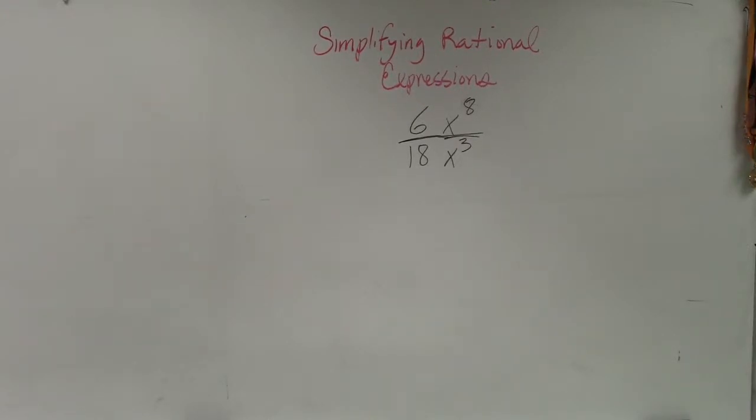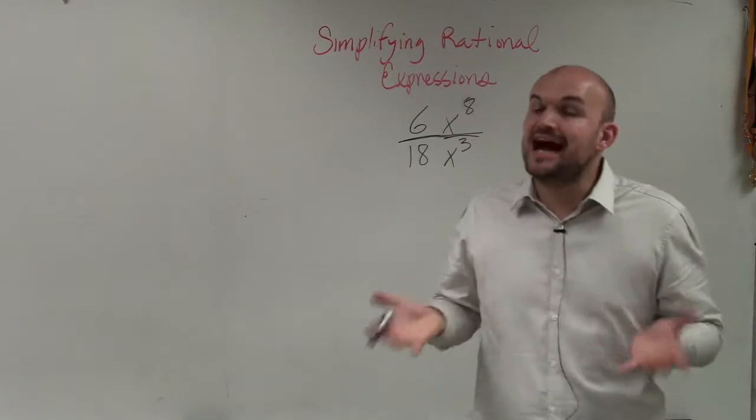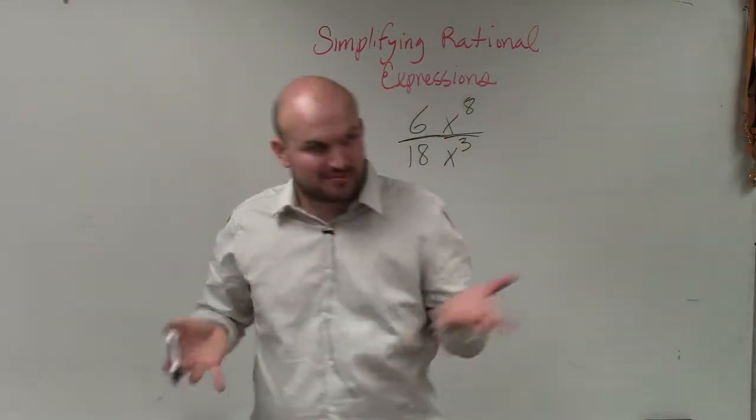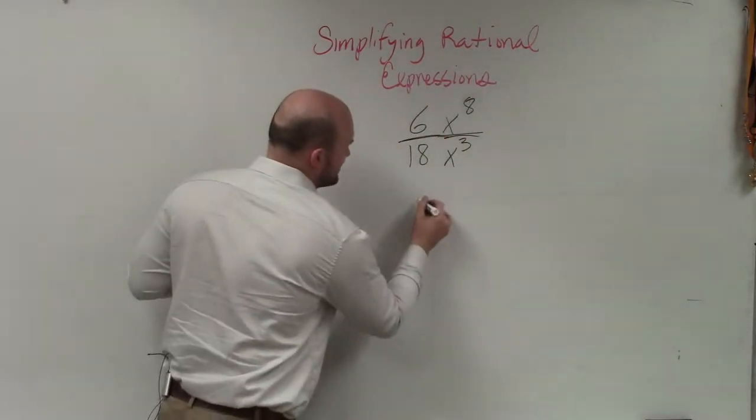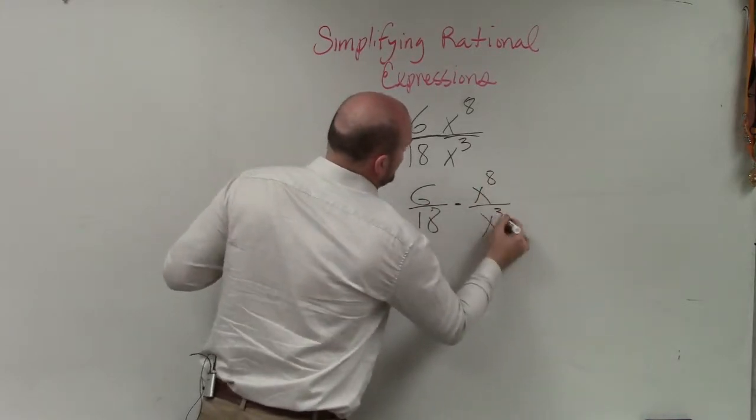So ladies and gentlemen, when doing a problem like this, I think the easiest thing to be able to do is obviously to separate this into two different problems. We know we have basically 6 over 18 times x to the eighth divided by x cubed.